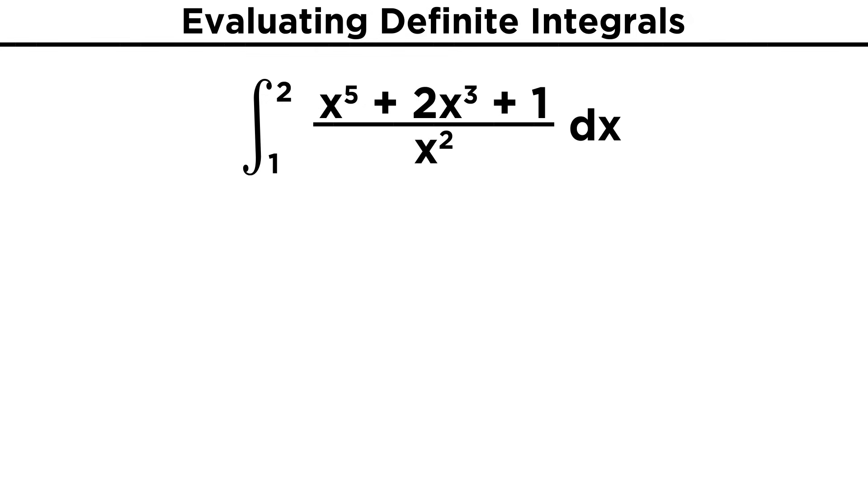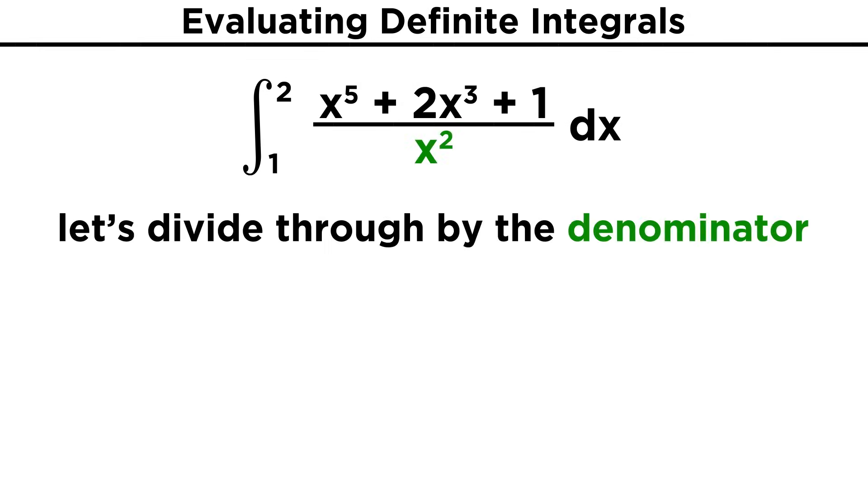How about just one more? Let's try the quantity x⁵ + 2x³ + 1, all over x², evaluated from one to two. This seems much trickier because it's a fraction, but we can very easily express this as a regular polynomial, we just have to divide each term in the numerator by x².